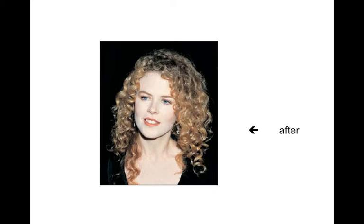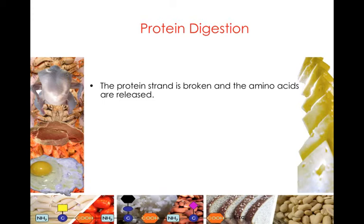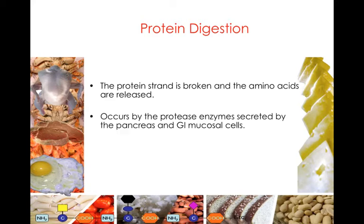Protein denaturation happens to food in the cooking process, it happens to proteins in our body, and here's an example of how it happens to your hair. After protein has been denatured and the protein strand is broken, the amino acids are released.